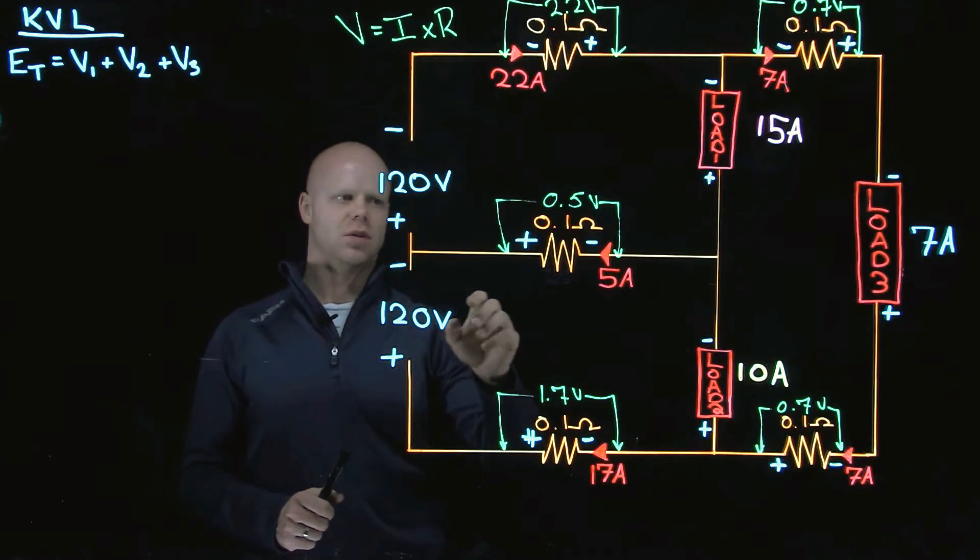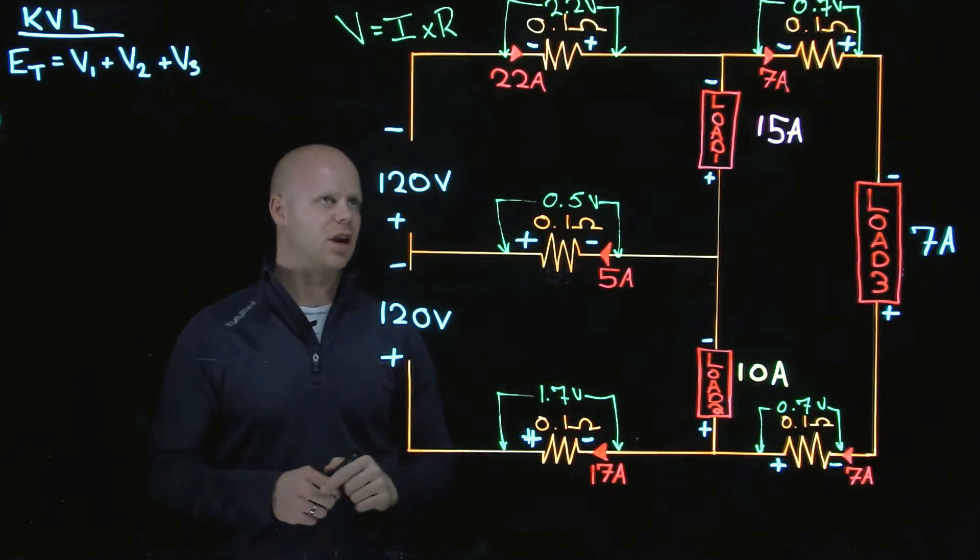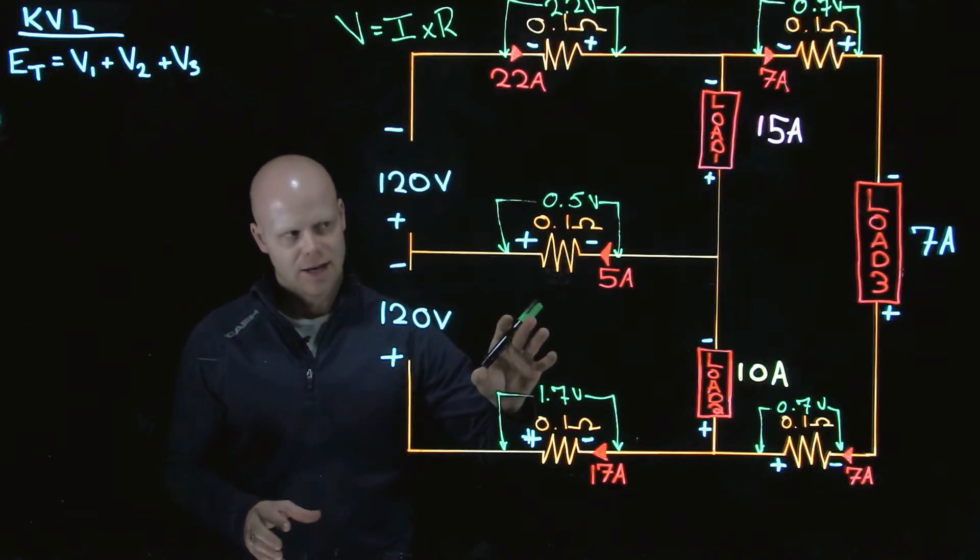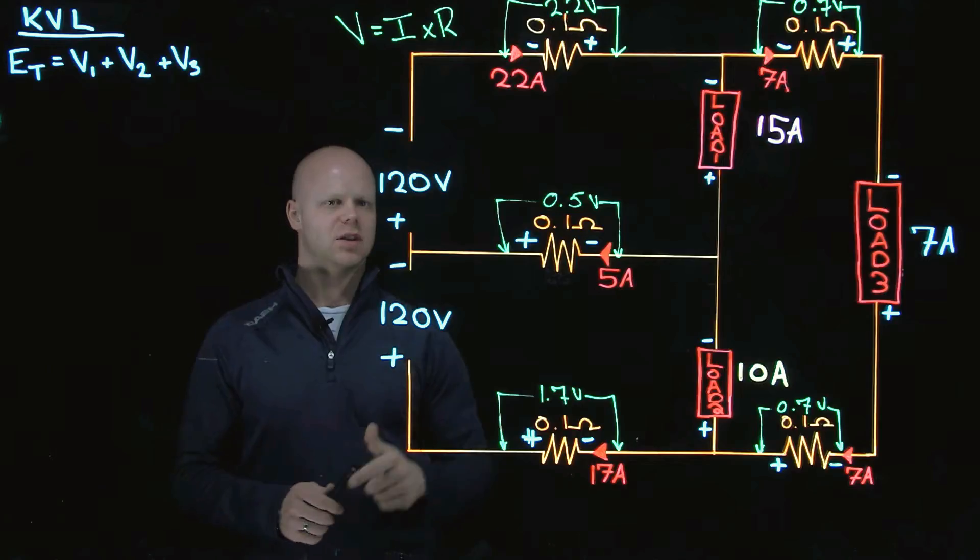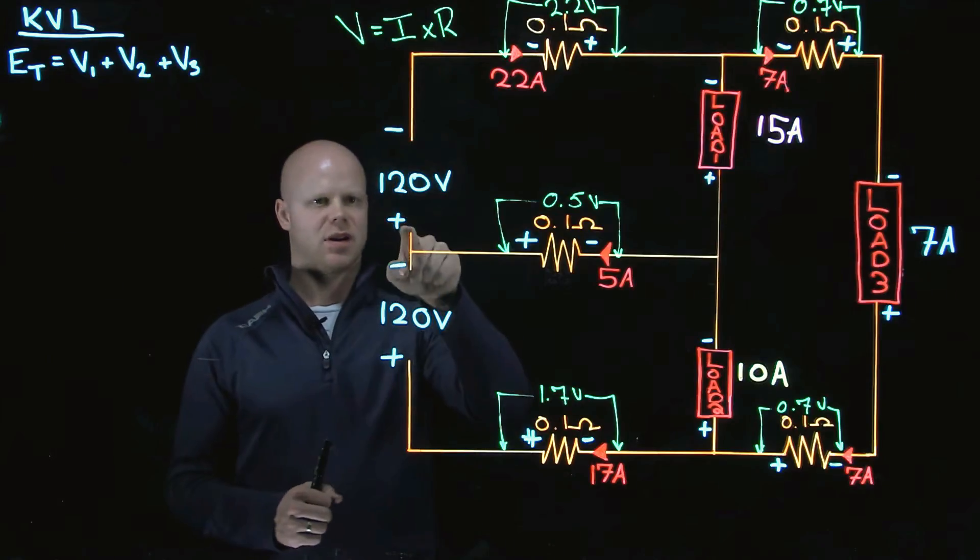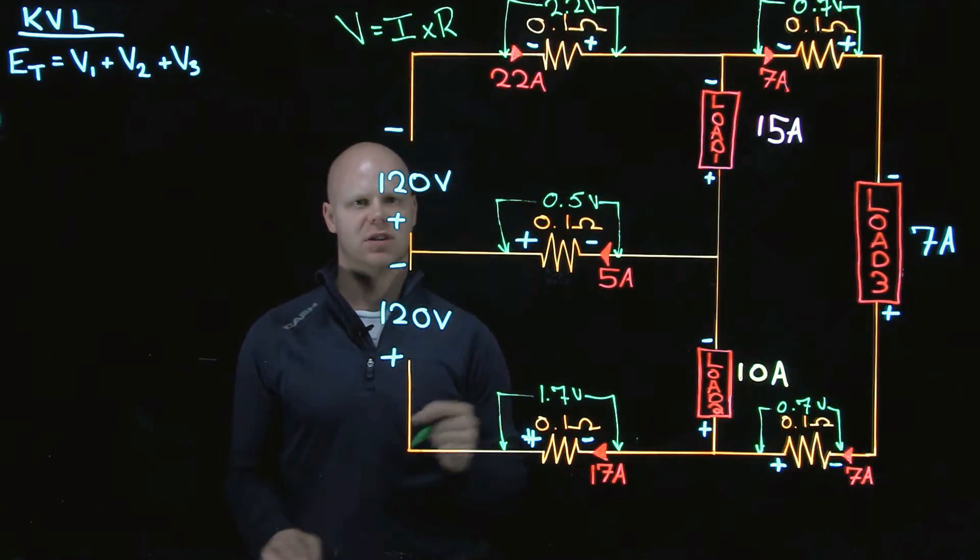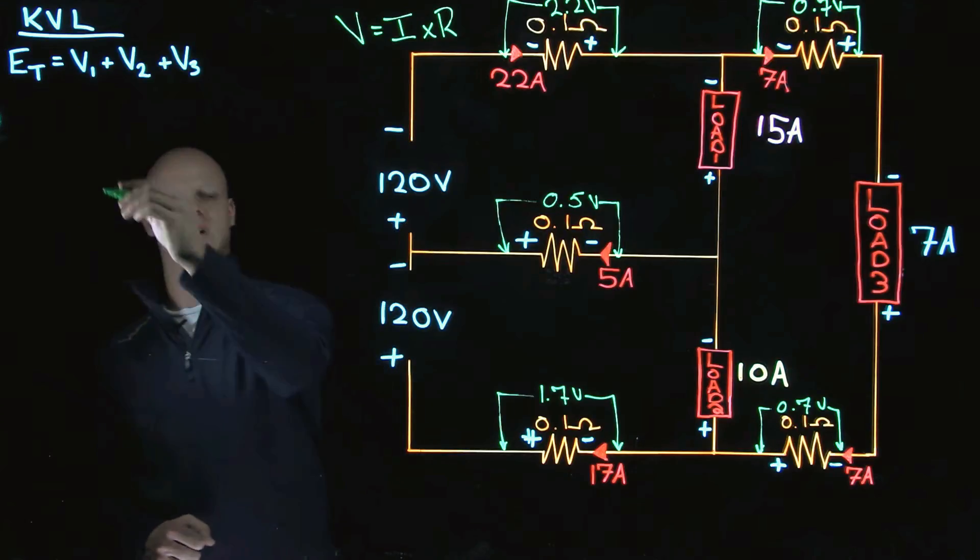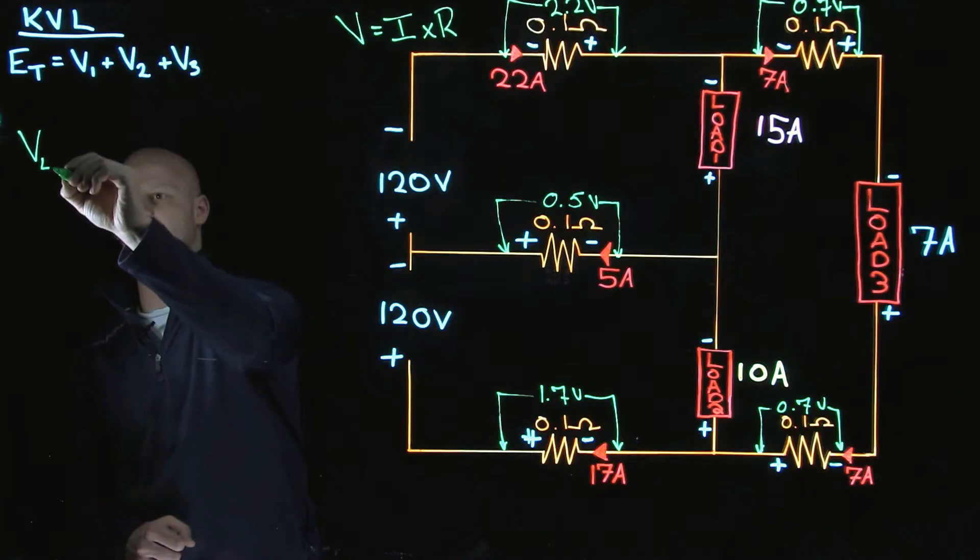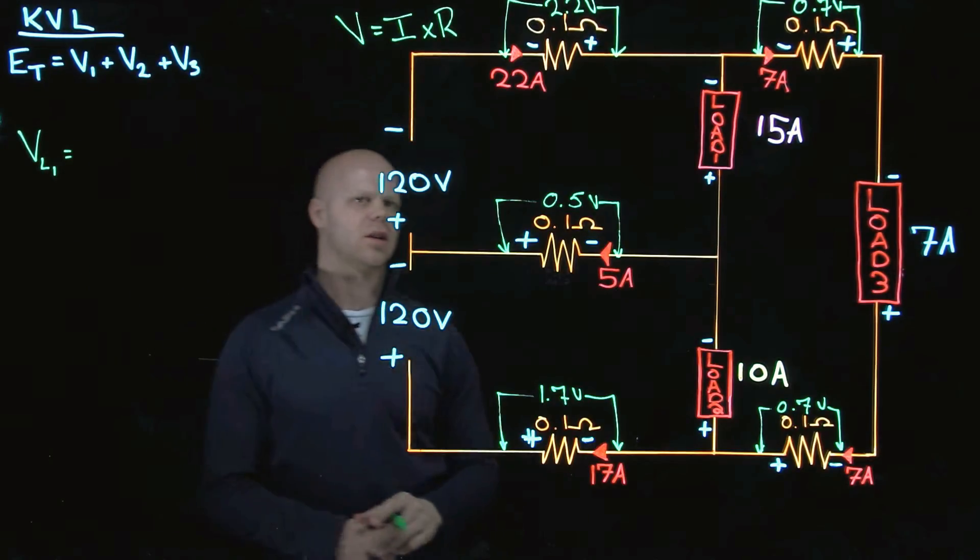I like to start at a point and then work my way entirely through that circuit. So from here, we can start right at this plus sign. So the very first thing that we are going to do is add. If I want to calculate, we're looking at the voltage across load 1.